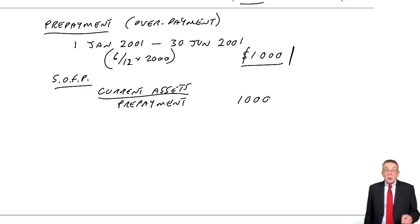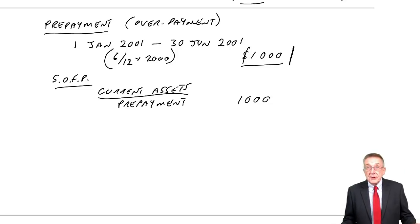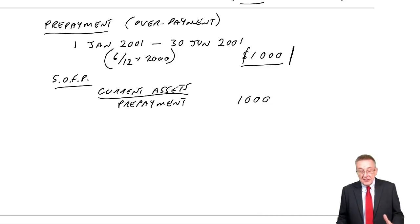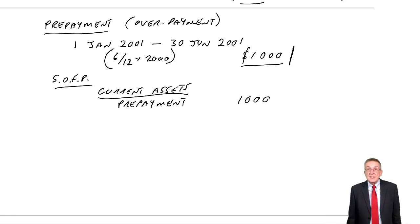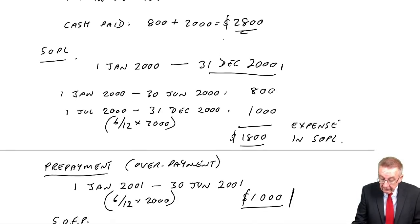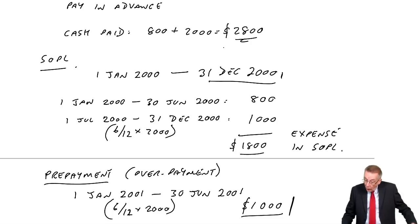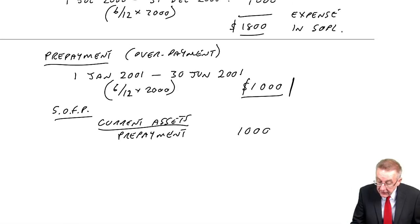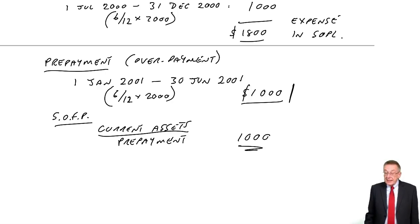So there we are — part A says show extracts from the statement of profit or loss and the statement of financial position. Questions on this will be asking what's the expense going to be in the statement of profit or loss — it's $1,800 — and how much is the prepayment, the overpayment, the receivable in a sense, in the statement of financial position — and that of course is $1,000.